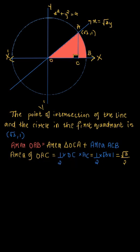Area of triangle OAC equals half into OC into AC, where OC is the base and AC is the height. Therefore, half into root 3 into 1 equals root 3 by 2.